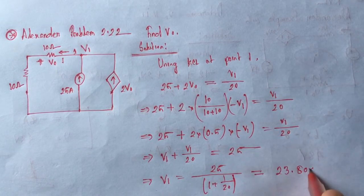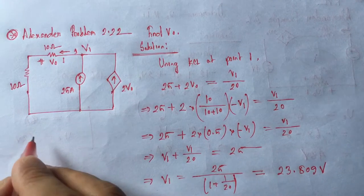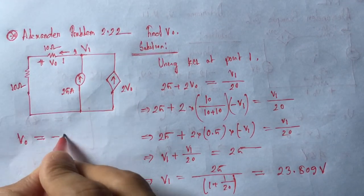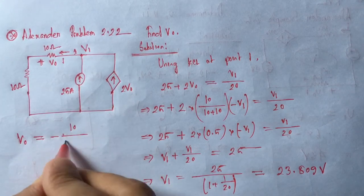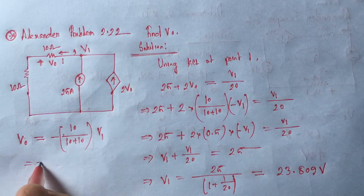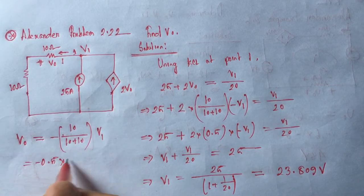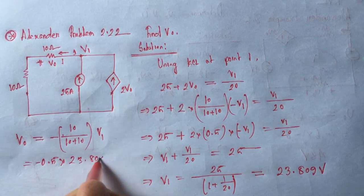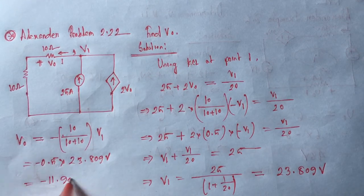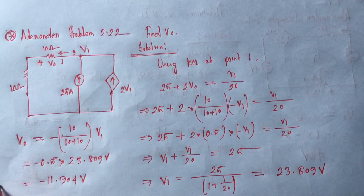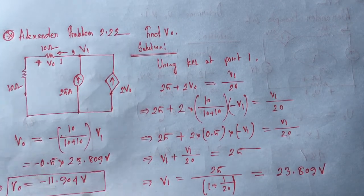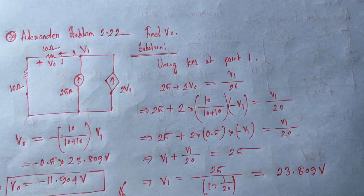Solving this equation, V1 equals 23.809 volts. So V0 equals minus 0.5 into 23.809 volts, which is minus 11.904 volts. This is the answer. Thank you.